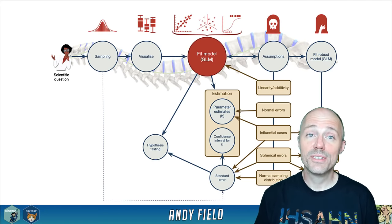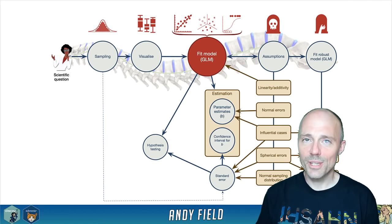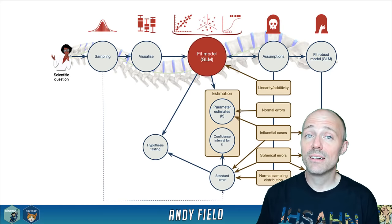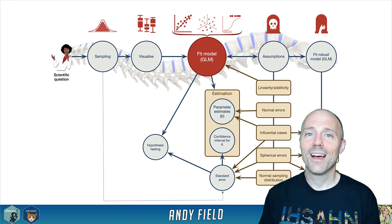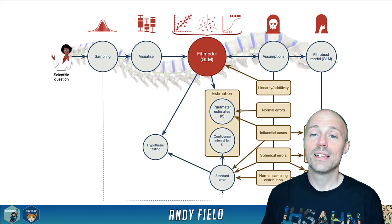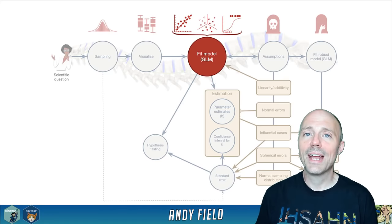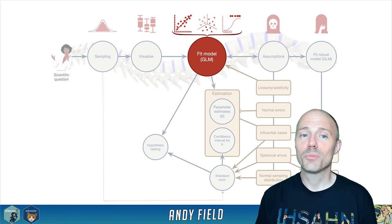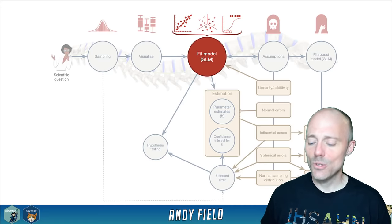We can hypothesis-test those parameters to see whether they differ from a particular value, normally zero. We've also seen that models have various assumptions and potential sources of bias, and when models haven't met assumptions or show bias, we fit robust versions instead. Today we're still focusing on changing the form of the model — specifically how the model adapts to different kinds of predictors, continuing from the previous lecture on categorical predictors.